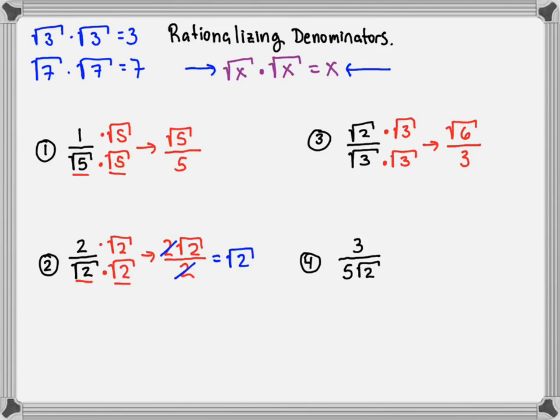We cannot cancel a square root with a whole number, square root on top, whole number on bottom. So we just leave that as is.